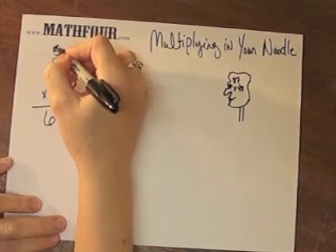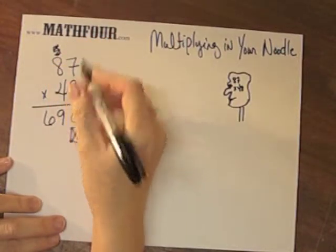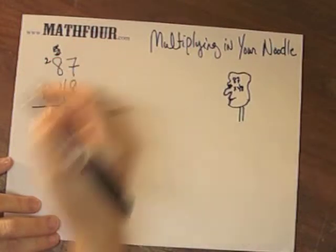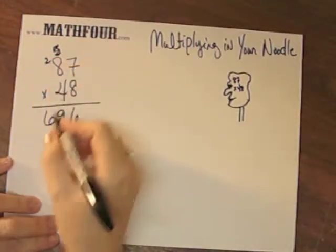Then I do 4 times—we have to get rid of this guy now. 4 times 7 is 28, carry the 2. 4 times 8 is 32, plus 2 is 34.